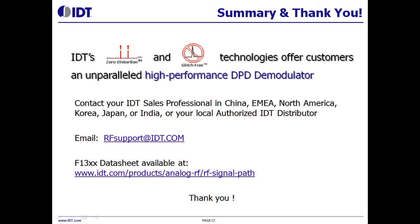IDT's two key technologies — zero distortion and glitch-free — offer customers an unmatched high-performance DPD demodulator. For technical support, contact your local IDT sales professional or email rfsupport at idt.com to request a sample, evaluation kit, and application support. More product information about the IDT F30 series is available at the website address shown on the screen.